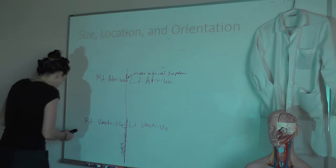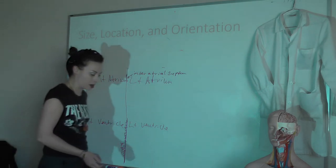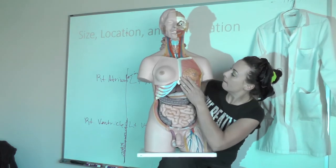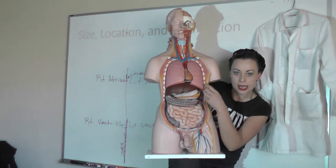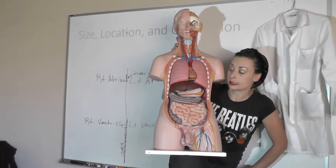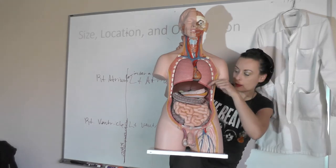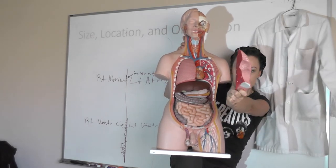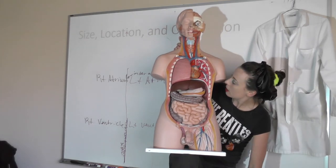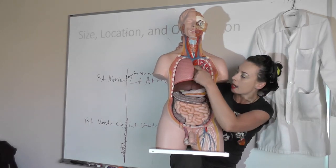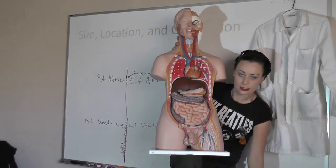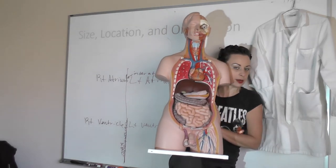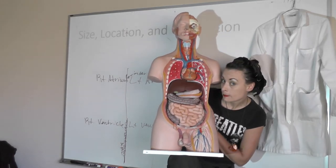Let's talk about the size, location, and orientation of the heart. Your heart is located between your lungs and is oriented so that it pokes anteriorly and inferiorly into the left lung. The left lung has a region called the cardiac notch to accommodate the heart. The right lung has an extra lobe but no cardiac notch because there's no heart pressing into it. The heart is surrounded by the serous membrane called the pericardium.